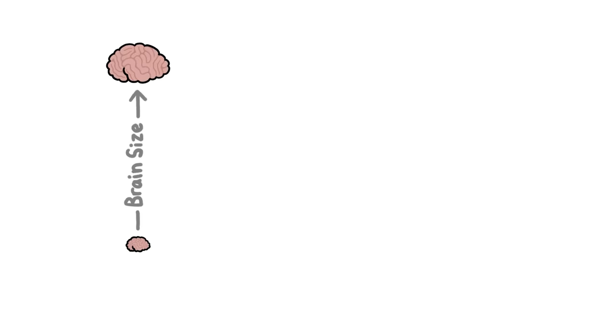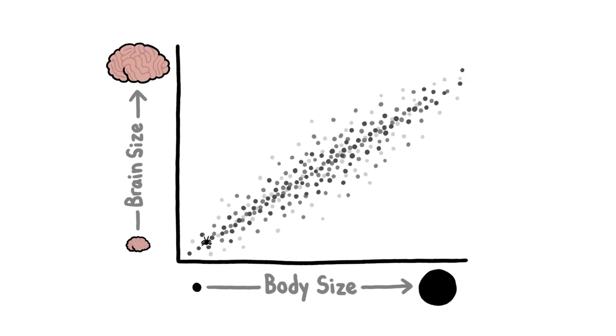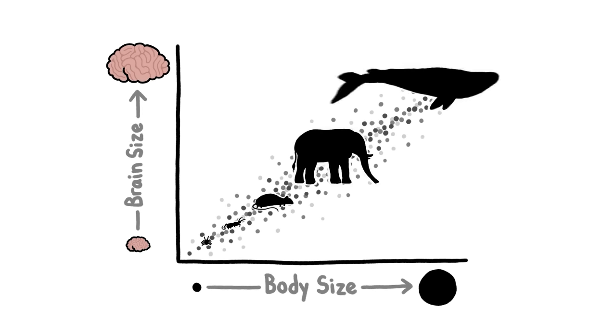because in general, the size of animals' brains and the size of their bodies is super tightly linked. Mites have smaller brains than ants, which have smaller brains than mice, which have smaller brains than elephants, and so on.